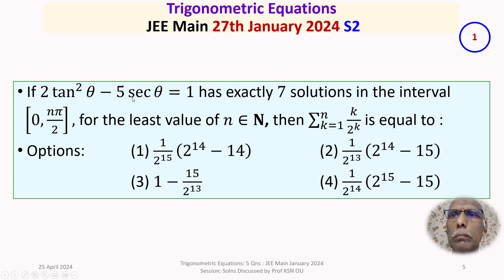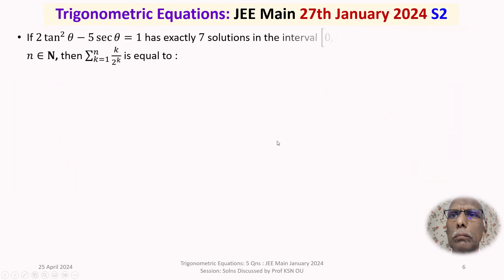We are given this trigonometric equation, which has exactly seven solutions in the closed interval [0, nπ/2] for the least value of n belonging to ℕ. We first need to find that least value of n, then compute the finite series Σ(k=1 to n) k/2^k. We are given four options.